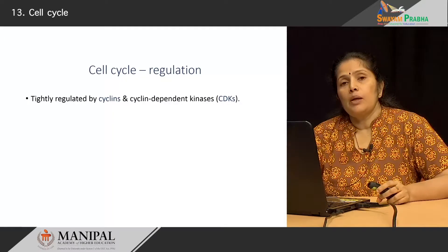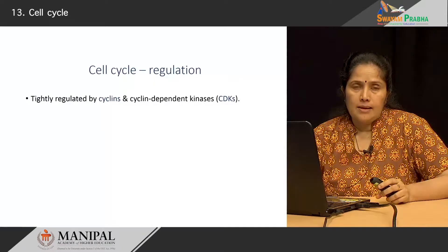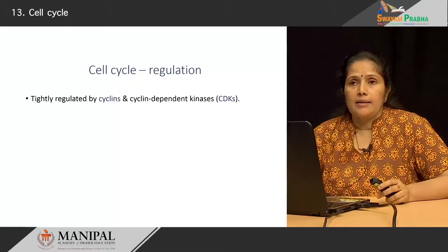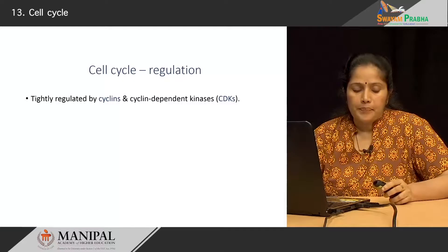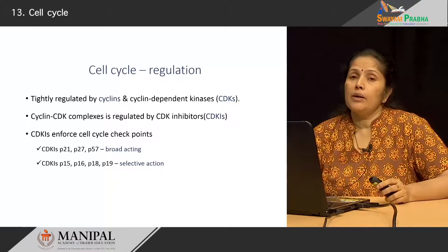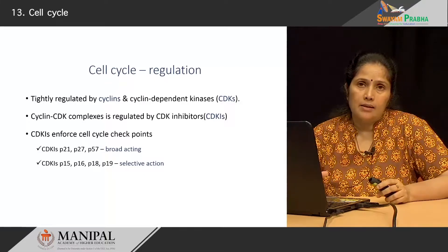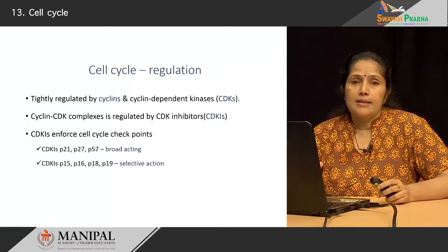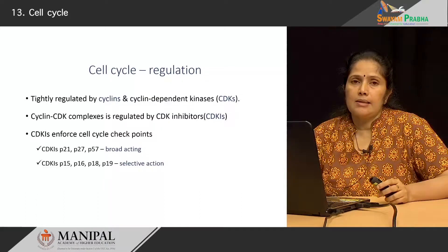This entire process is tightly regulated by proteins known as cyclins, as well as enzymes known as cyclin-dependent kinases, or CDKs. There is a tight interplay between cyclins and CDKs. These cyclin-CDK complexes are in turn regulated by certain inhibitors, known as CDK inhibitors, which play a very important role in enforcing checkpoints within the cell cycle as cells go through the different phases.